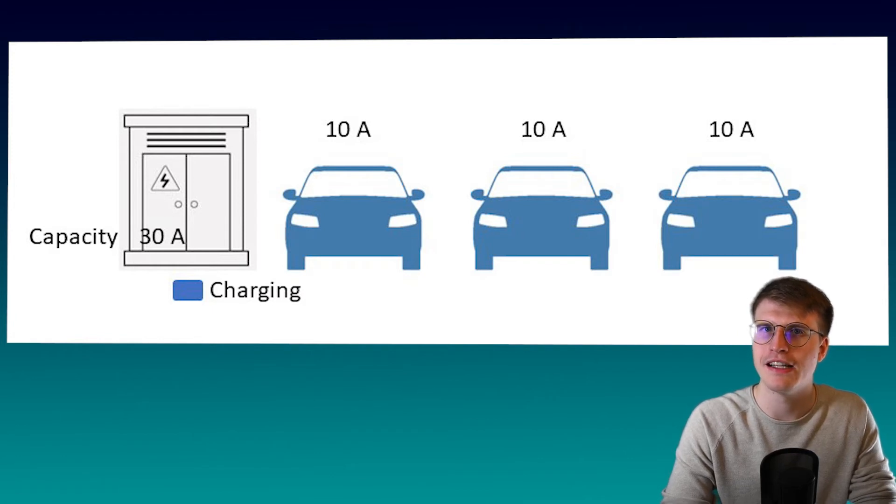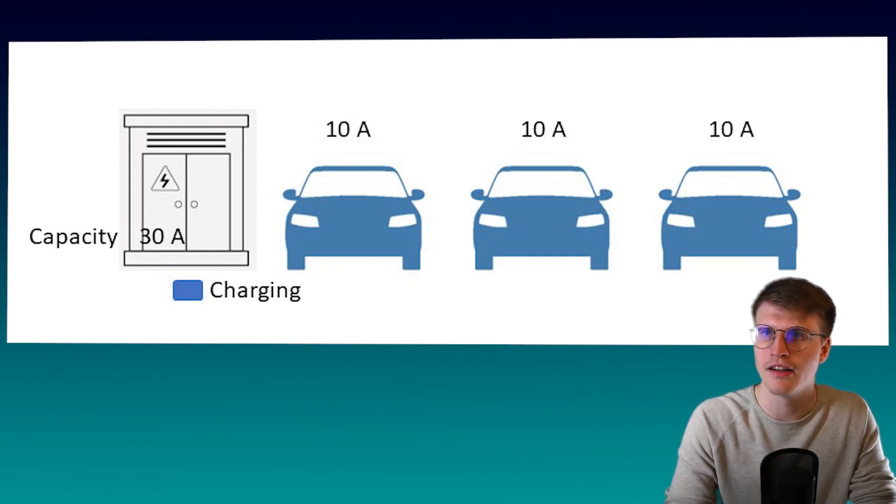However, now with a station that is supplied with 30 amps, which means that all connected cars can charge with a total of 30 amps. We have also connected three cars, which can charge with a maximum of 16 amps, just like in the first scenario.